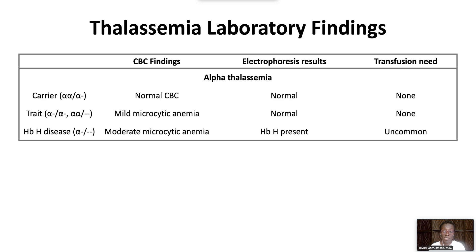Hemoglobin H disease is associated with moderate microcytic anemia with a hemoglobin range of 7 to 8 grams per deciliter. Hemoglobin electrophoresis shows the presence of hemoglobin H. Transfusions are uncommon but may be needed at periods of increased demand, such as with acute infection or in pregnancy.